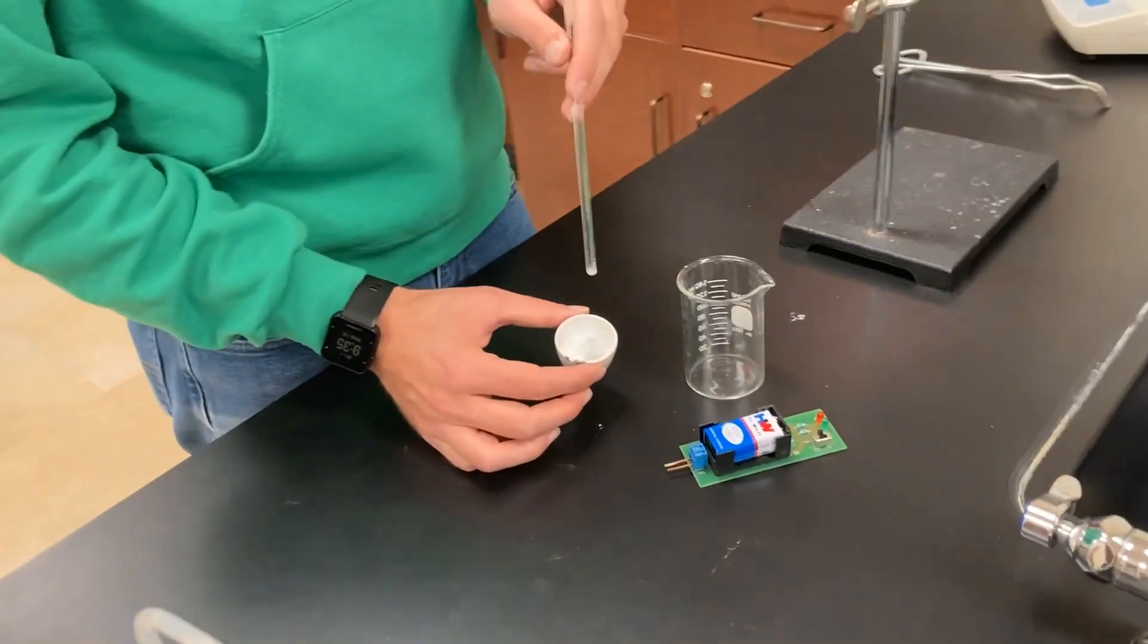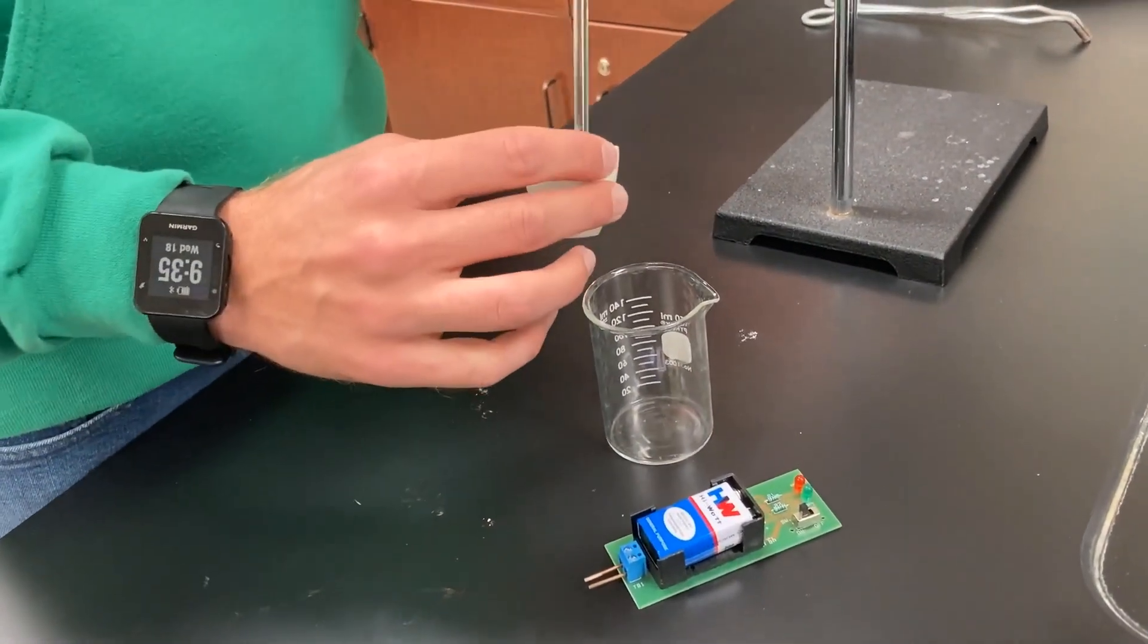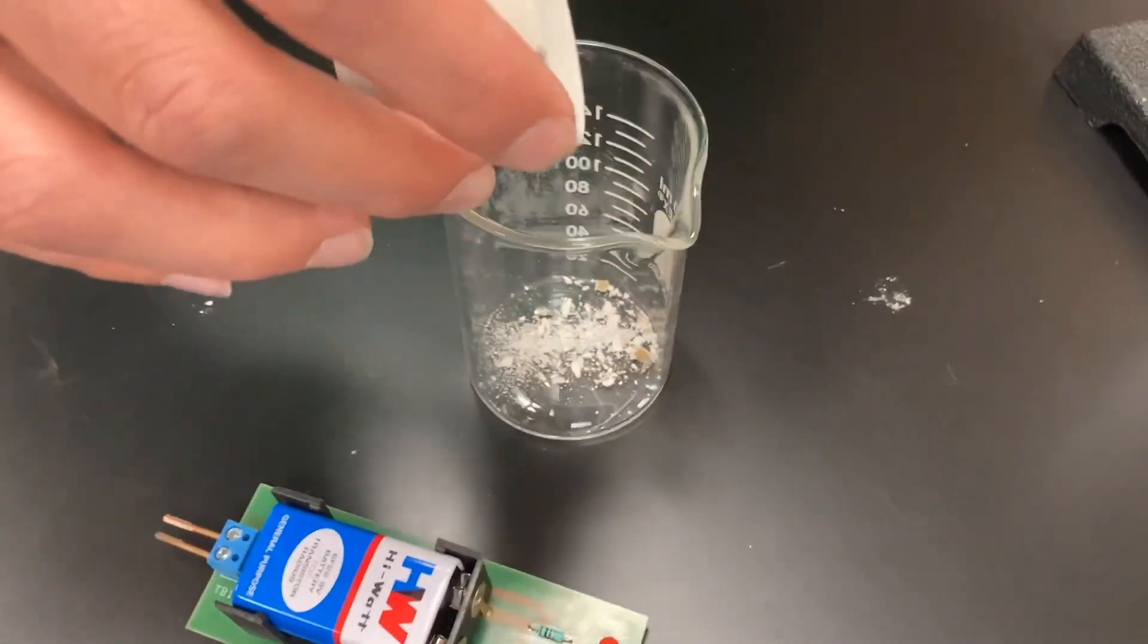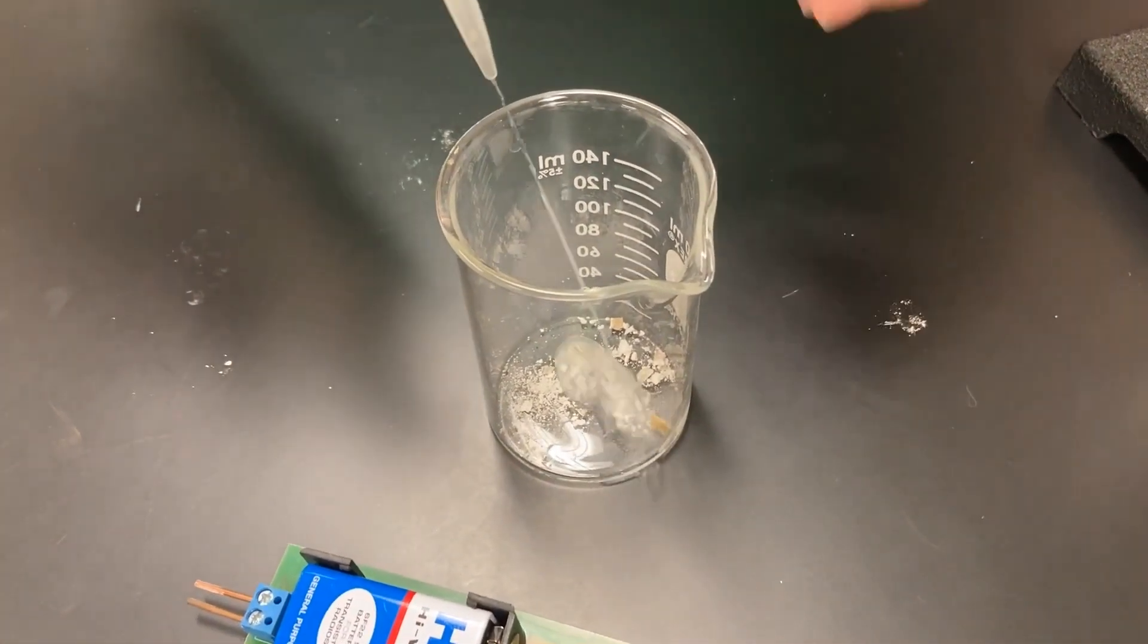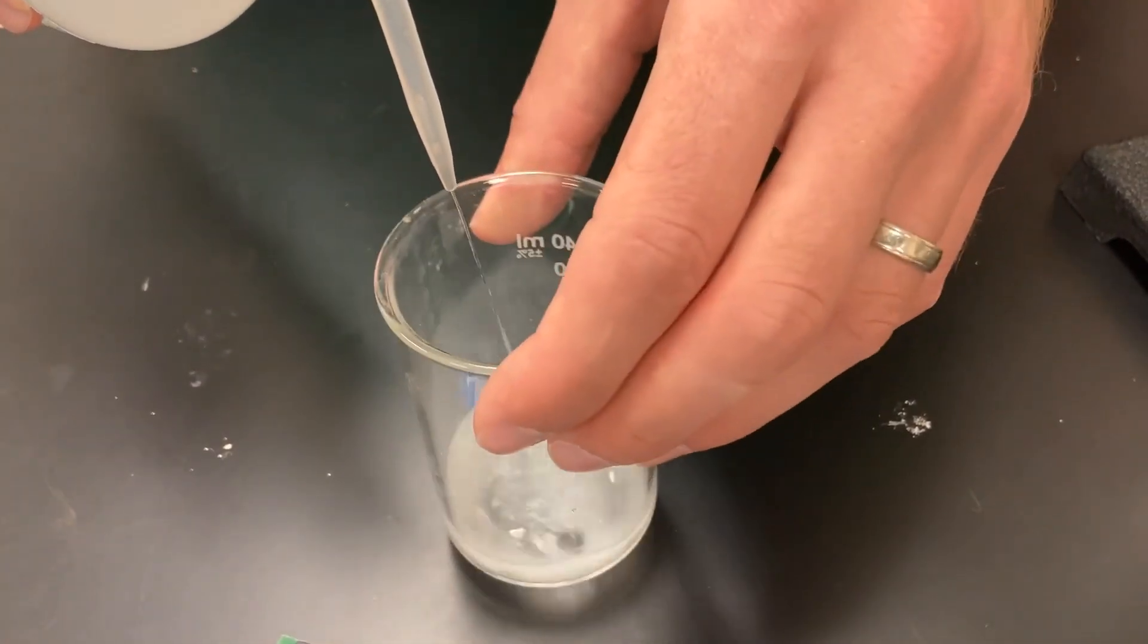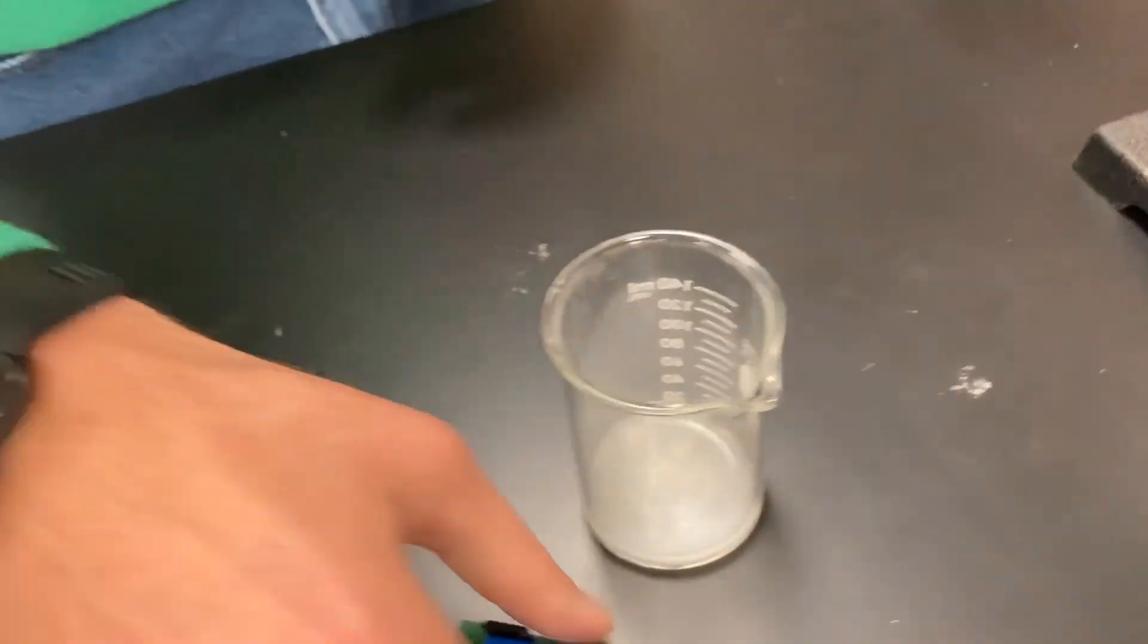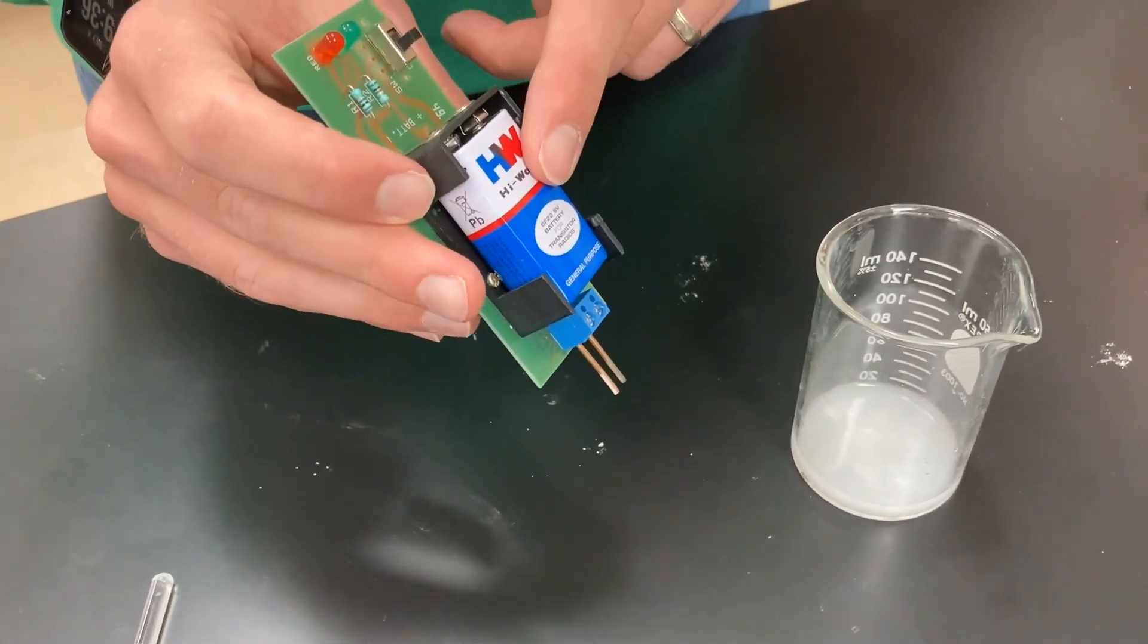Another property of ionic compounds is that they are electrolytes. So if I take my solid after I've kind of crushed it up with my stir rod, I can put that into a beaker and if I add a little bit of distilled water to that, just enough to kind of create a mixture, I can test the electrical conductivity of this mixture. And if the products that were made are in fact ionic, then they should conduct electricity. This is a very simple circuit board here. It's a conductivity tester that has a battery hooked up.